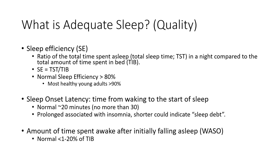Another metric is the amount of time spent awake after initially falling asleep, which ties into sleep efficiency. This looks at disturbances during sleep — did you fall asleep and then wake up? For example, if you slept for an hour, woke up for five minutes, went back to sleep, then woke up again for 30 minutes, that impacts quality. We should see time awake after sleep onset between 1% and 20%. If it exceeds 20%, your sleep efficiency would also drop below 80%.